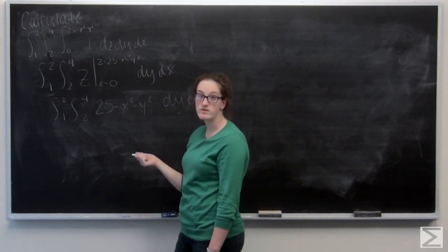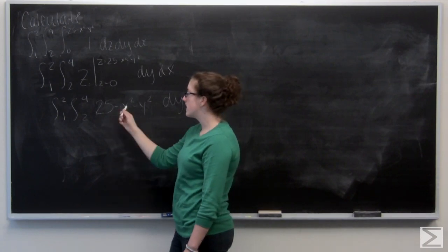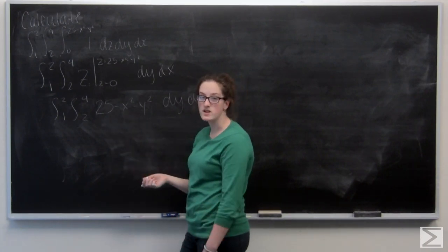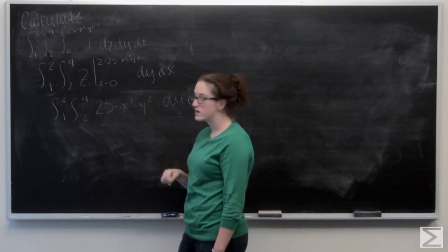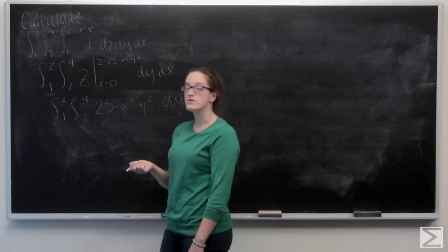Now we want to integrate with respect to y. The 25 and x squared are just like constants here, so they're just going to become 25y and x squared y. Y squared is going to integrate to be 1 third y to the third.